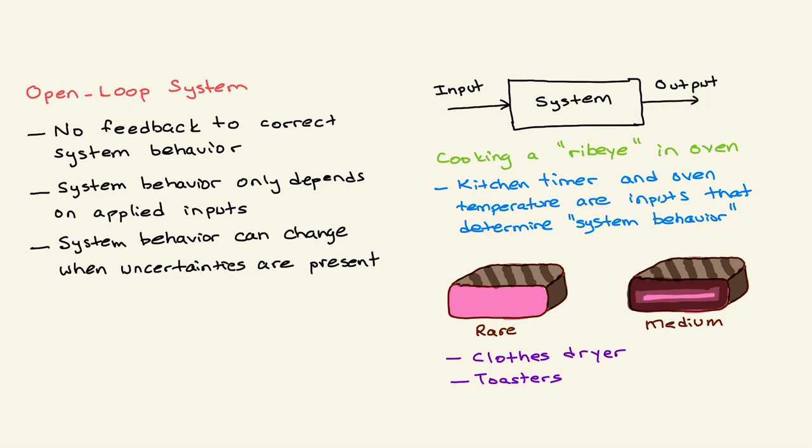One of the good examples that I use is cooking a ribeye in an oven. First of all, you adjust your inputs. In this case, your inputs are kitchen timer and oven temperature, and these inputs determine your system behavior. If you keep your kitchen timer shorter or oven temperature lower, then you can get a rare ribeye.